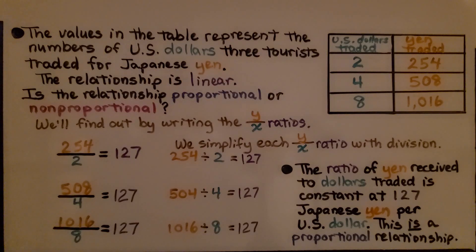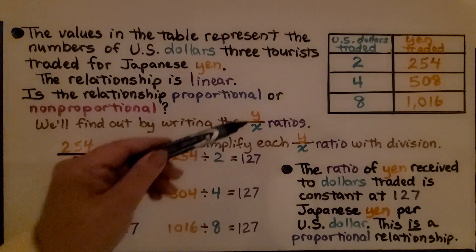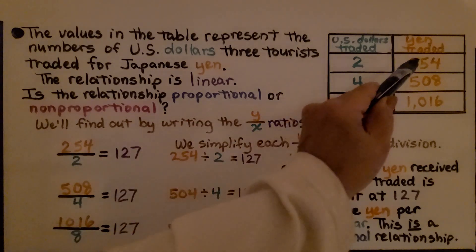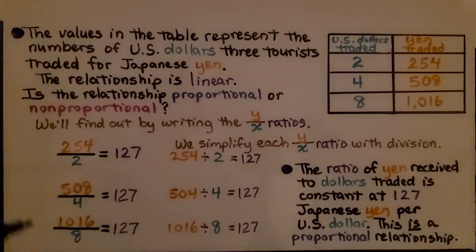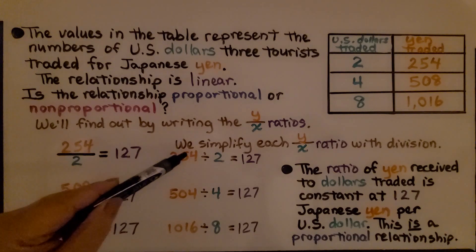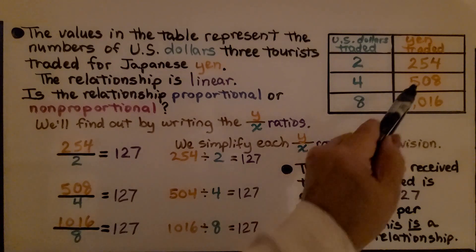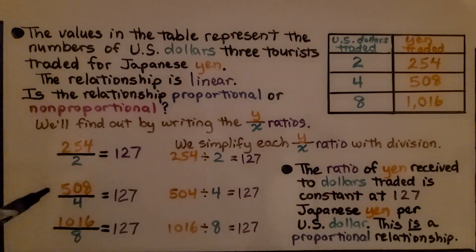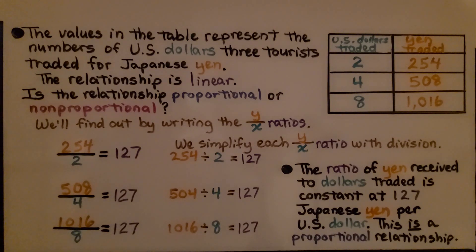The relationship is linear. Is the relationship proportional or non-proportional? We'll find out by writing the Y to X ratios. We have 254 for Y and 2 for X. Simplifying each Y to X ratio with division: 254 divided by 2 equals 127. Then 508 to 4 gives 127. And 1016 to 8 gives 127. The ratio of yen received to dollars traded is constant at 127 Japanese yen per U.S. dollar. This is a proportional relationship.